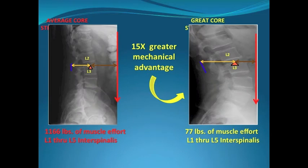Here is the bottom line: mechanical disadvantage requires 15 times greater muscle effort to perform the same task. Which core structure do you want — which is going to go the distance? The one that's in a constant state of contraction and fatigue, or the one that's at rest and ready to perform when called upon? The choice, of course, is obvious.